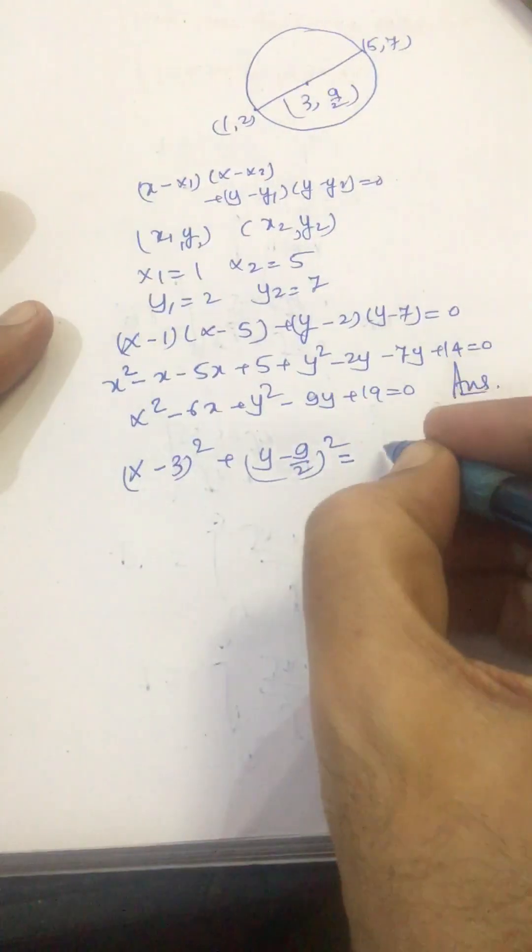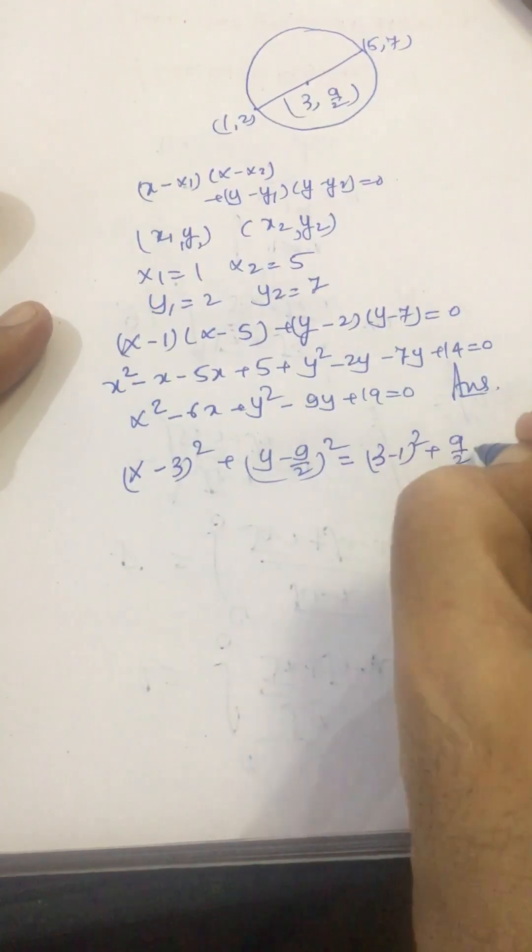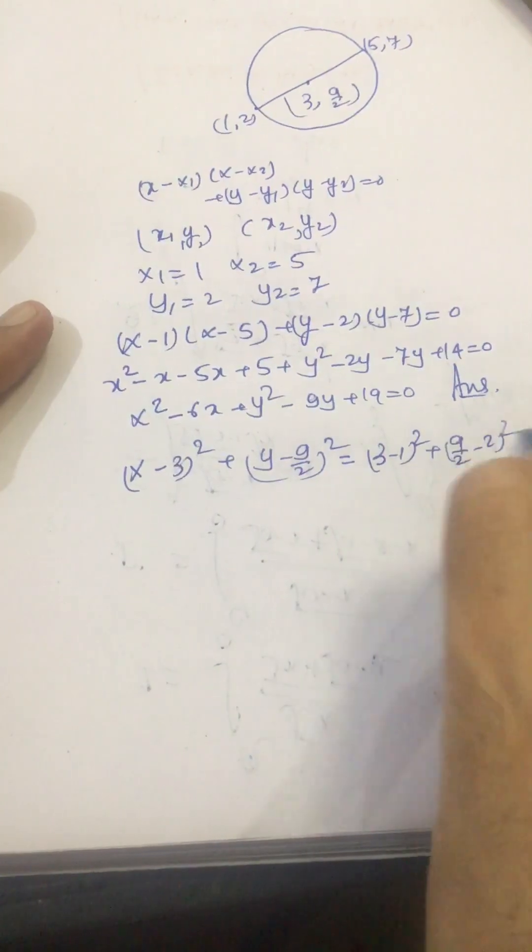Its square will be (3 - 1)² + (9/2 - 2)², this is the radius.